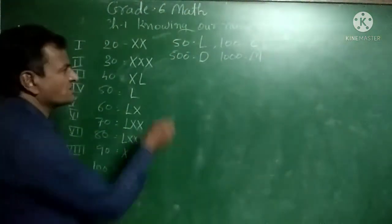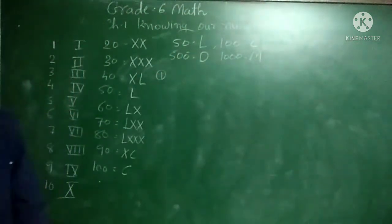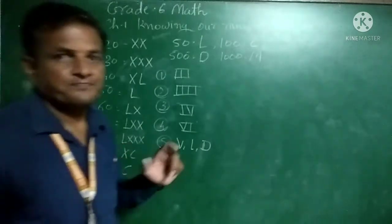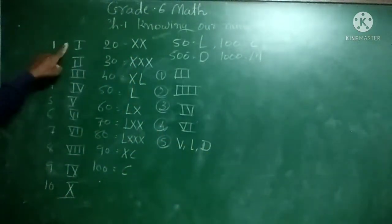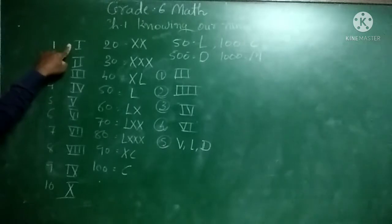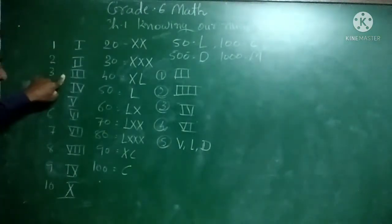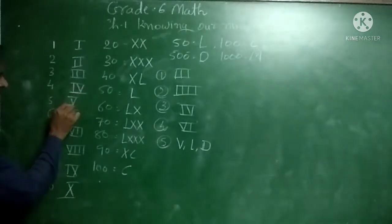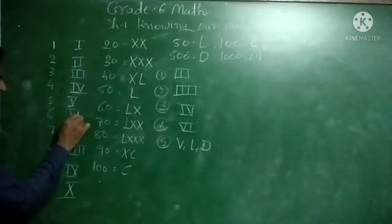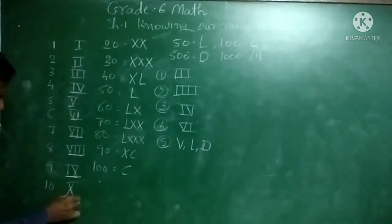We have learnt some rules of Roman numerals. For 1 we write one standing line (I). For 2 we write two standing lines (II). For 3 we write three standing lines (III). For 4 we write IV. For 5 we write V. For 6 we write VI. For 7 we write VII. And for 10 we write X.